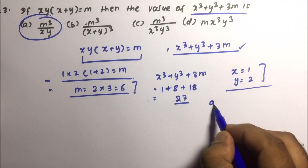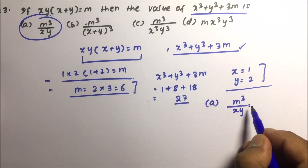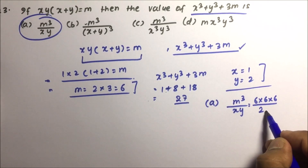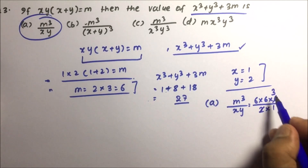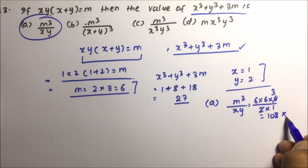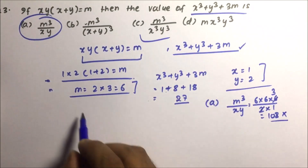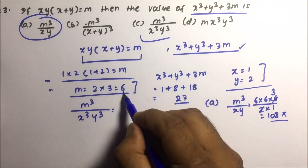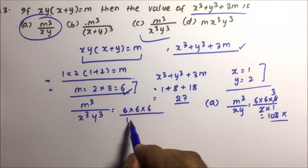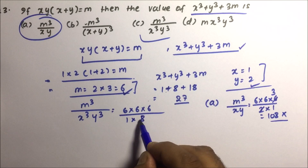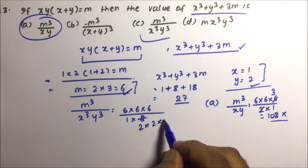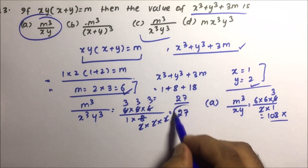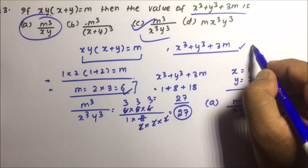Now take the options to find which one gives 27. Option A: m³ divided by xy = 6³ / (2 × 1) = 216 / 2 = 108. That's wrong. Option C: m³ divided by x³y³ = 6³ / (1³ × 2³) = 216 / 8 = 27. We can write 8 as 2 × 2 × 2, three times, and this gives us 27. So option C is the correct answer.